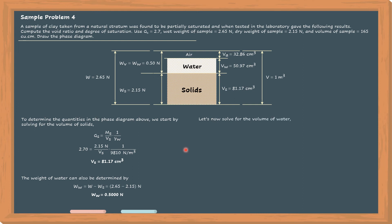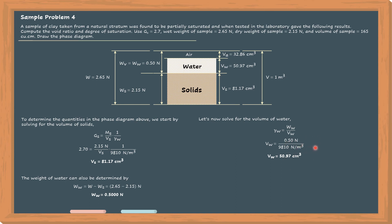Next, let's solve for the volume of water. The volume of water according to the phase diagram is equal to 50.97 cubic centimeters. To get that value, we use the unit weight formula: unit weight of water equals weight of water over volume of water. Since the weight of water and the unit weight of water are both known, we can compute the volume of water, which equals 50.97 cubic centimeters. Note that if you divide 0.5 by 9810, you must convert the answer to cubic centimeters.